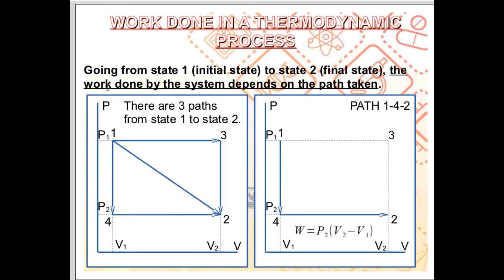Consider now the following pressure versus volume graph, which gives us 4 different states: state 1, state 2, state 3, and state 4. Let state 1 be our initial state and state 2 be the final state. Going from initial state 1 to final state 2, we have 3 different paths that the system can take.